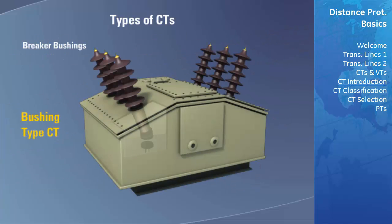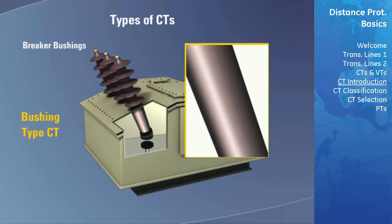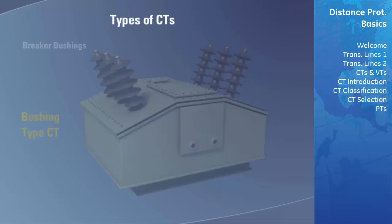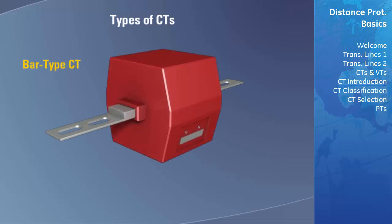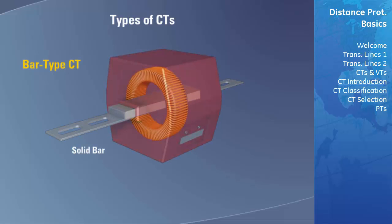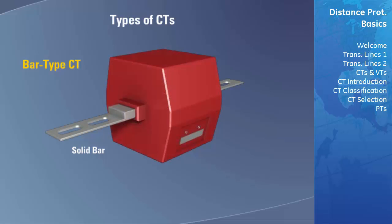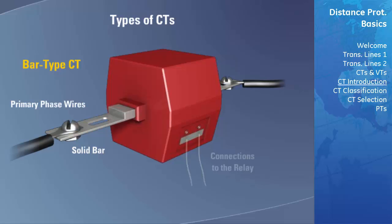A bushing-type CT refers to a CT that is built into another power system device, such as a breaker. Terminals are provided on these devices to permit connecting the CT to a relay. A bar-type CT has a solid bar that passes through the annular core to form the primary winding of the CT. The primary phase wires of the power system are then connected directly to these bars to complete the connections.